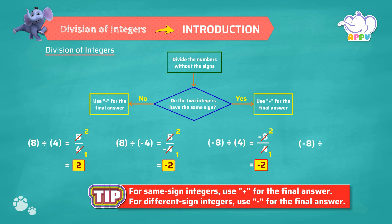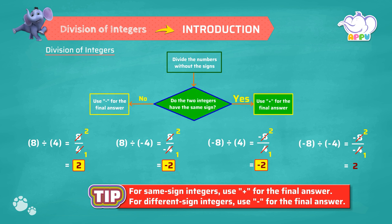Minus 8 divided by minus 2. We first divide 8 by 2, which equals 4. We have to place the sign for this quotient. Here minus 8 and minus 2 are both negative integers. So the answer is 4. We do not use a plus sign.